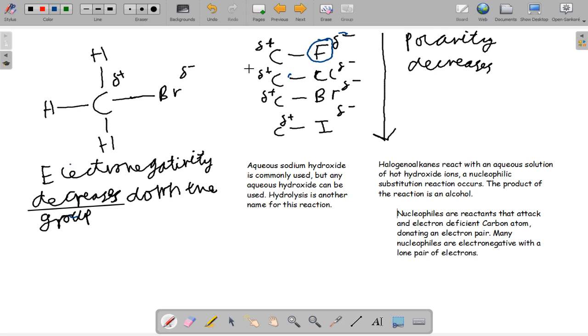OH- would have two lone pairs, not bonding pairs. One bonding pair between the hydrogen. You need a pair of electrons to make a lone pair. So two bonding pairs, two lone pairs. And since it's a minus ion, three lone pairs then.